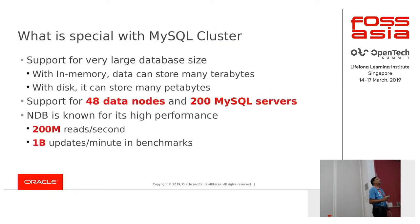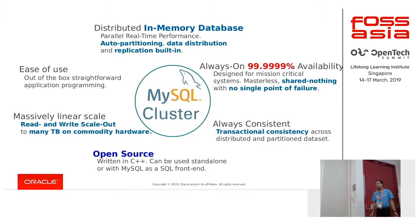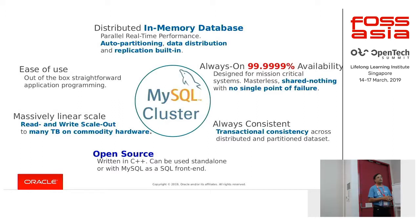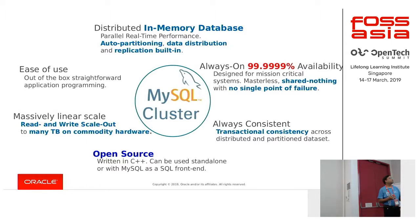MySQL cluster is an in-memory database. Auto-partitioning, data distribution, and replication are built-in features of MySQL clusters. Users don't have to worry about how table data will be partitioned, how data is distributed across the cluster, or what kind of replication is being used. Two types of replications are supported: synchronous replication within the data nodes of the cluster, and asynchronous replication between the master cluster and slave clusters.